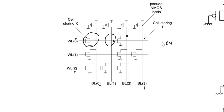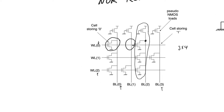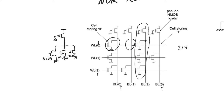This is called a NOR ROM because each column generally forms a pseudo-NMOS NOR gate, with a single PMOS load transistor on top and NMOS transistors in parallel forming the pull-down network, each activated by a different word line. In bit line 3, with only a single transistor, the column forms a one-input NOR gate — essentially a pseudo-NMOS inverter.